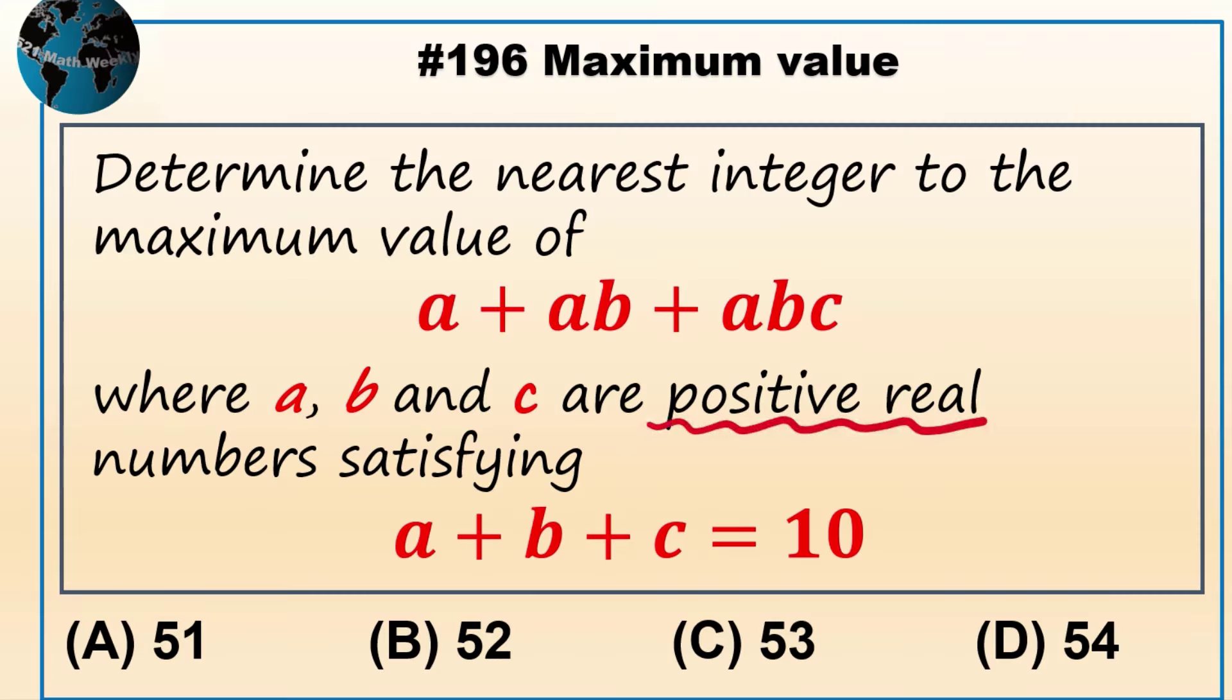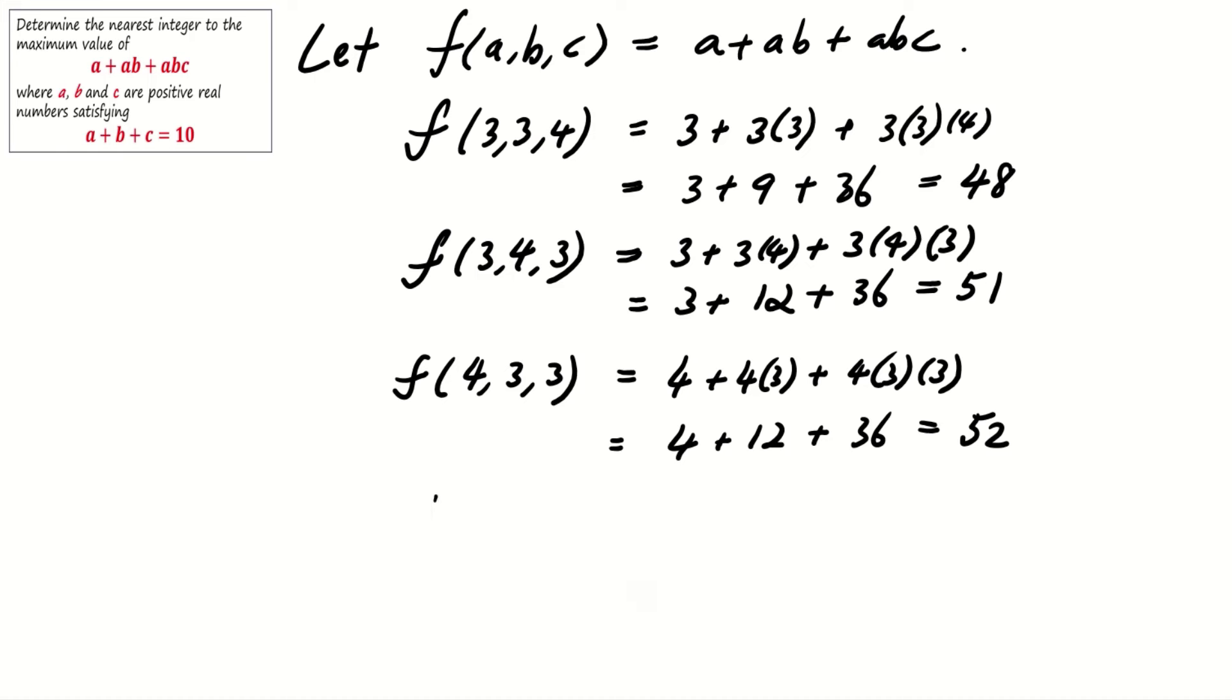Since a, b, c can be real numbers, we explore non-integer values, such as a equals 4, b equals 3.5, and c equals 2.5, giving us f equals 53, the highest so far.